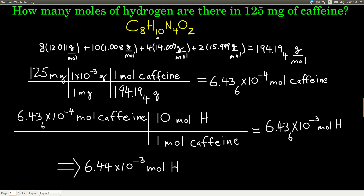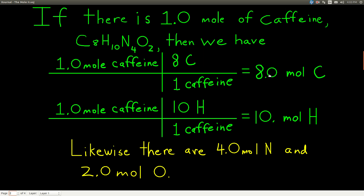Now we can use this. We want to know how many moles of hydrogen there are in 125 milligrams of caffeine. Let's think about this backwards from the answer. If we know how many moles of caffeine we have, then we know how many moles of hydrogen. These numbers are all conversion factors — for example, one mole of caffeine equals eight moles of carbon. We can convert between moles of caffeine and moles of carbon, hydrogen, nitrogen, or oxygen.